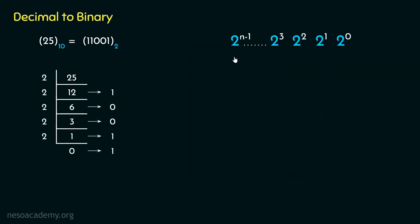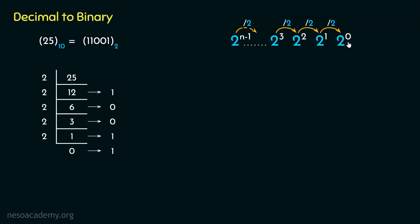Let's take that discussion a bit further. We just recalled that shifting towards the left means multiplication with 2. Therefore, shifting towards the right is going to be division by 2. The next place value 2 to the power n-2 can be obtained by dividing 2 to the power n-1 by 2. If we divide 2 cubed by 2 we get 2 squared; dividing 2 squared by 2 gives 2 to the power 1; and dividing that by 2 gives 2 to the power 0 — the place value of the least significant bit. So clearly, just like bitwise left shift means multiplication with 2, bitwise right shift means division by 2.